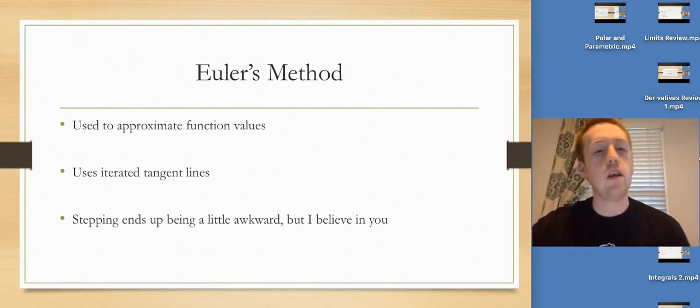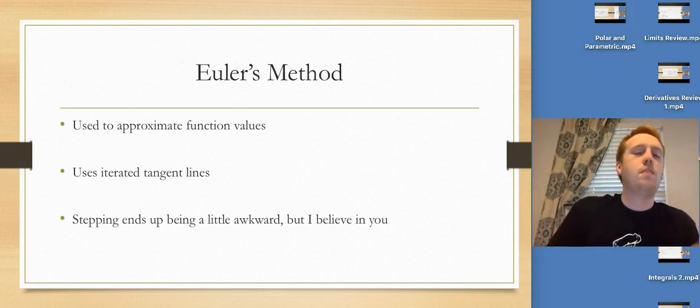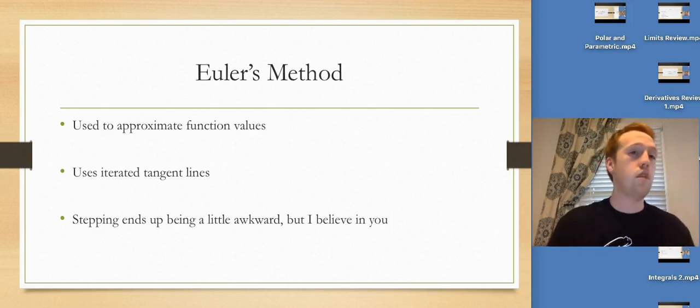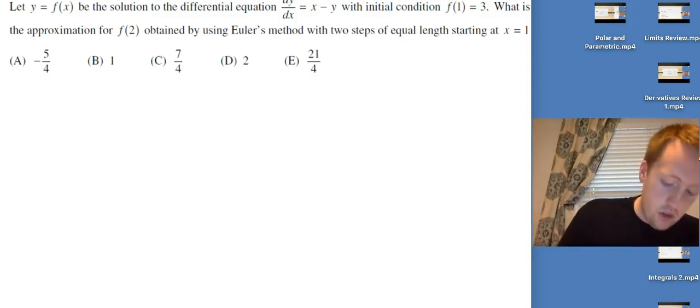Alright, let's look at Euler's method. Euler's method is a way that we approximate function values. Basically what it's just doing is using iterated tangent lines. The stepping up is a little awkward, a little bit like, which x do I plug in? I strongly believe in you. Let y = f(x) be the solution to the differential equation dy/dx = x - y with initial condition f(1) = 3. What is the approximation for f(2) obtained by using Euler's method with two steps of equal length starting at x=1?